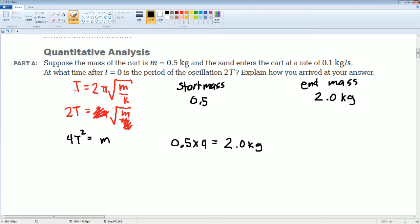So what is the difference here? The difference in the mass—mass final minus mass initial—is 2.0 minus 0.5 which equals